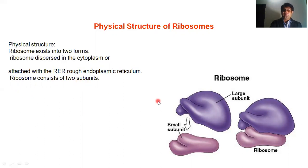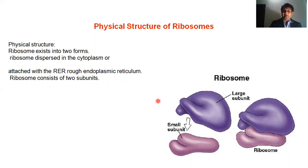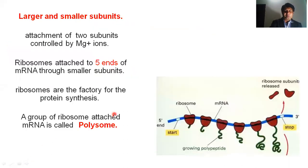Ribosomes consist of two subunits. When protein is not being synthesized, the ribosomes are disassembled — the 60S subunit is separate and the 40S subunit is separate. But when the cell needs to make protein, the 60S and 40S subunits attach together to form the 80S ribosome.